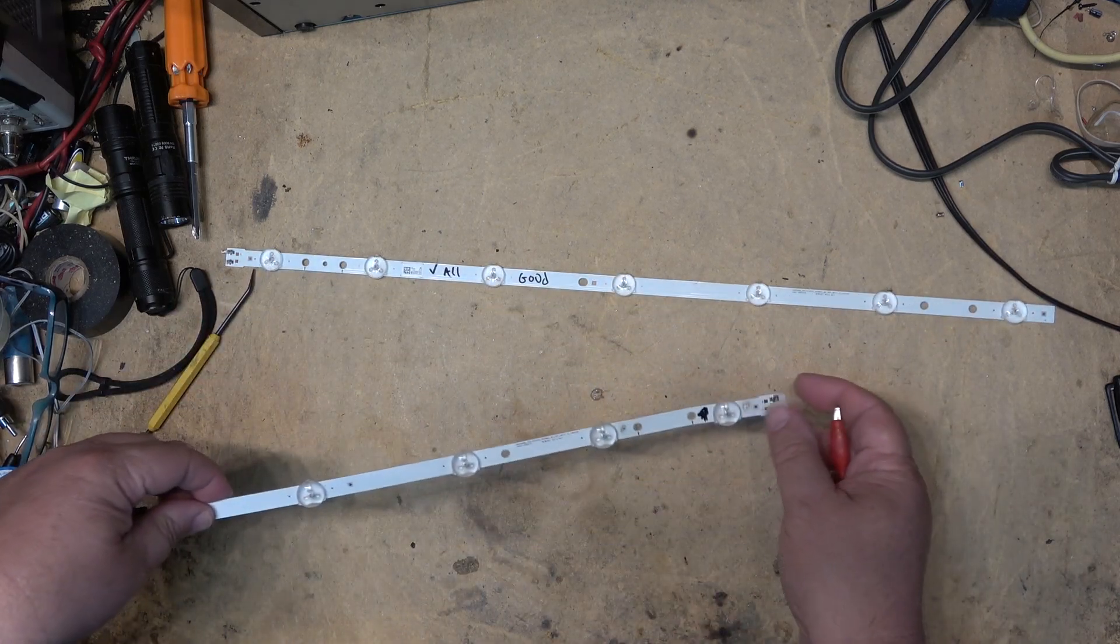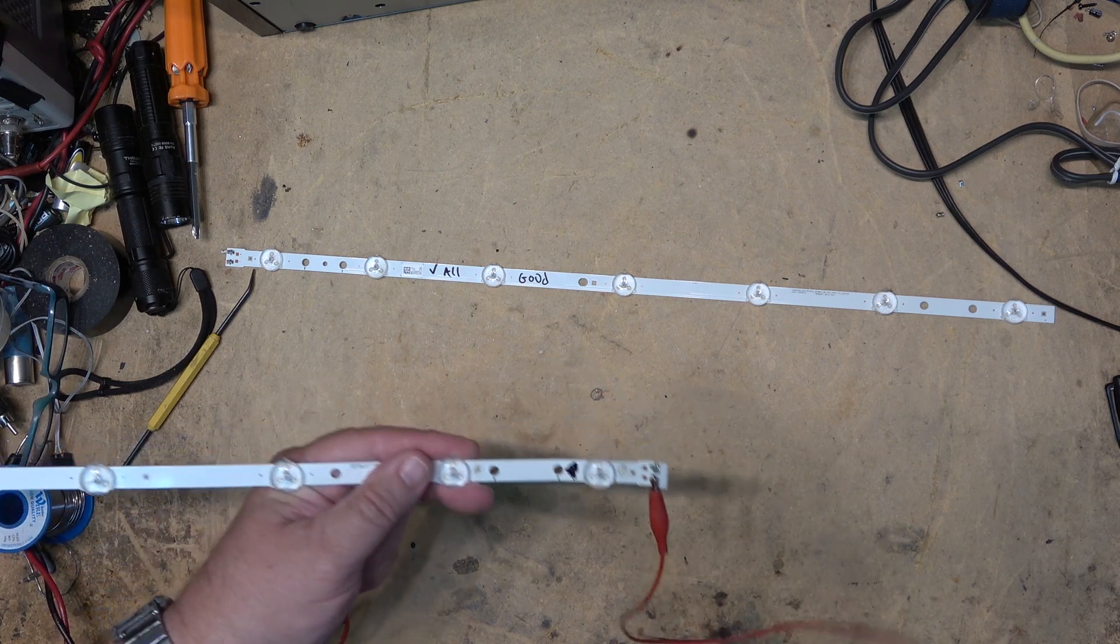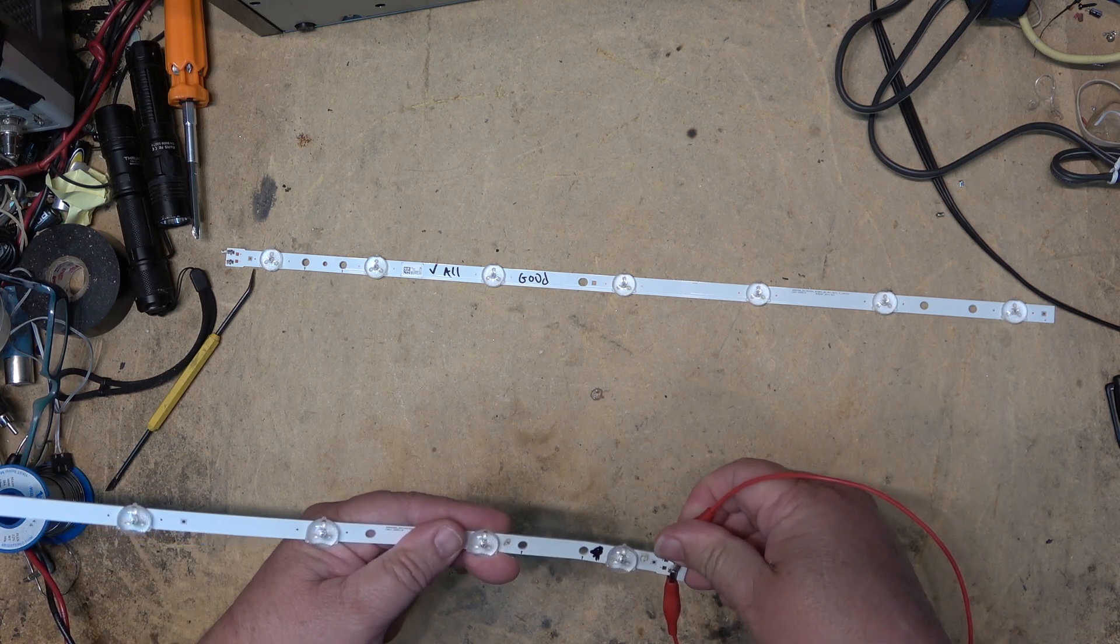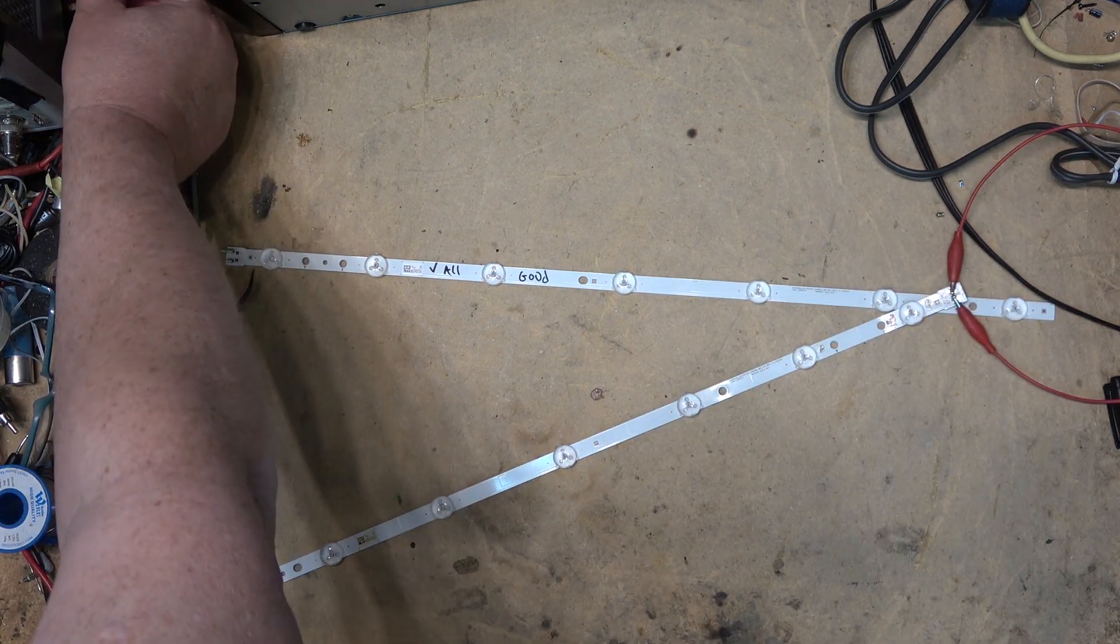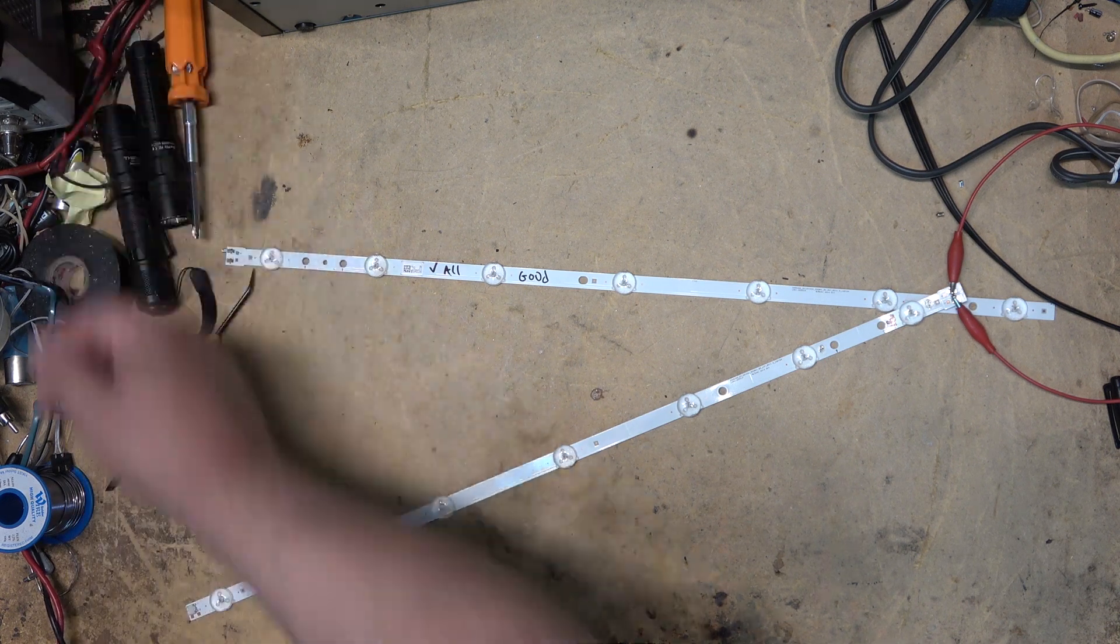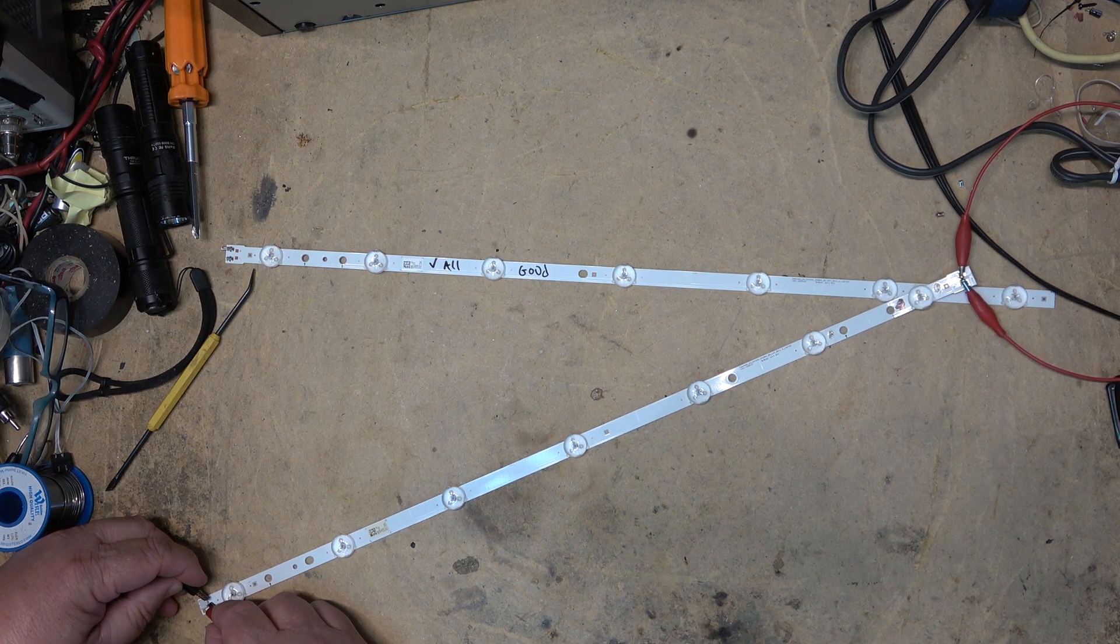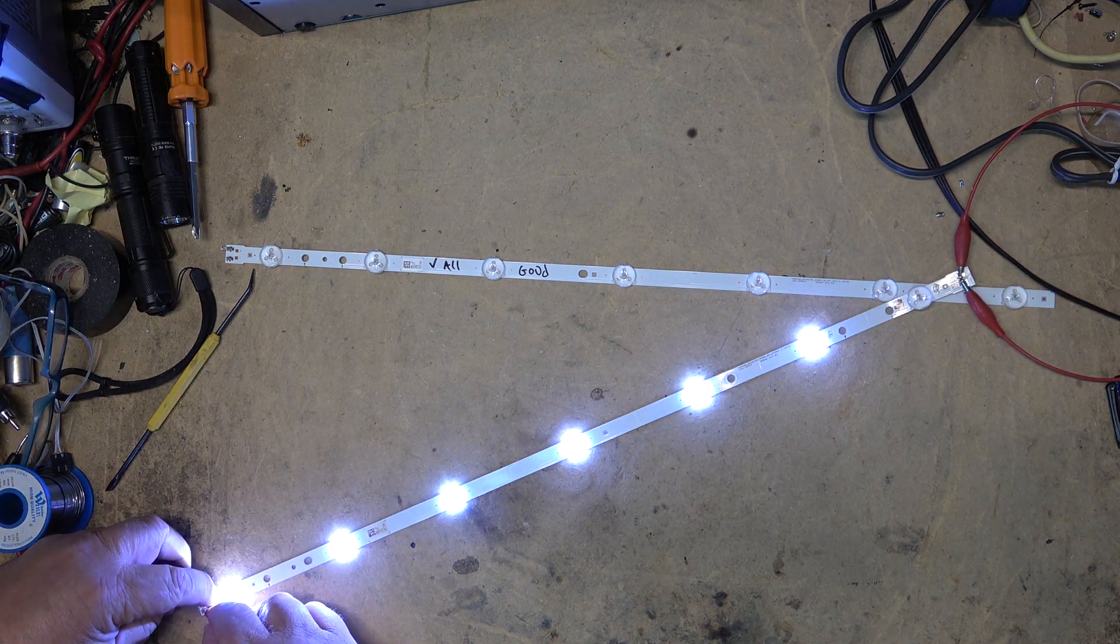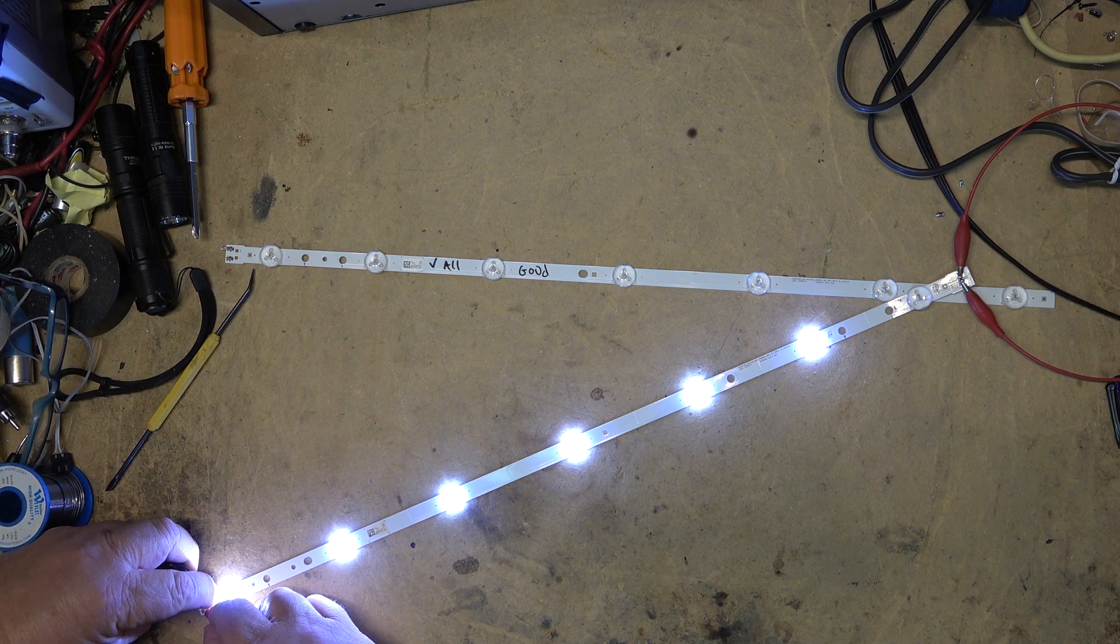For this strip here I need to short these two together to provide the return path, and then if I put my 24 volts, 20 volts, whatever - I'll put 24 on here - I put my positive on the positive terminal and my negative on the negative terminal, the lights will light up. And you'll see that the one light at the end is one that's shorted internally.